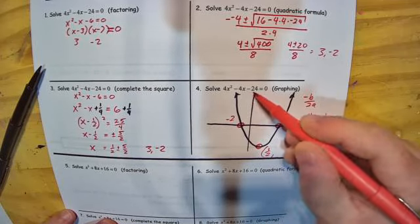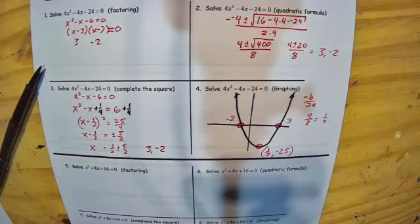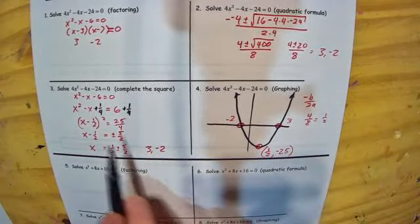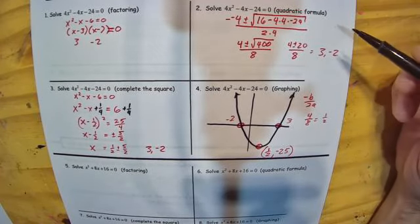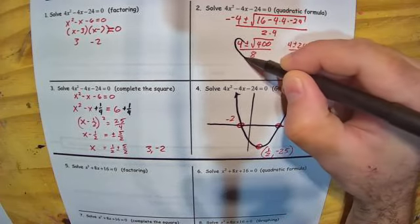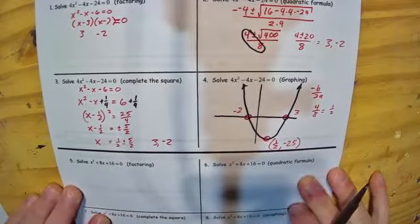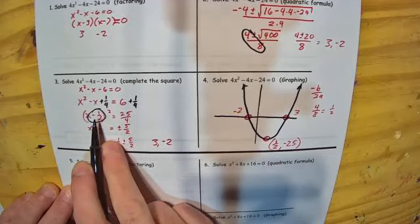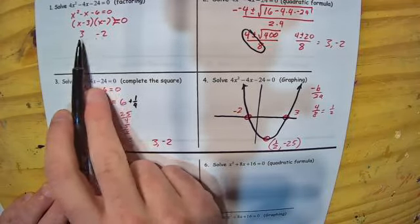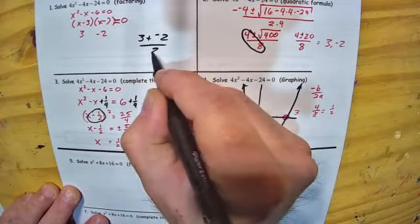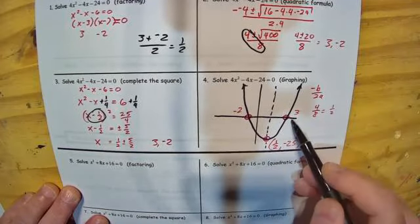To find the y-coordinate for the vertex, we plug one half into the equation: 4 times one half squared minus 4 times one half minus 24, which comes out to negative 25. What we find is the same solutions no matter which way we do it. There's additional information hidden here: this one half appears in the quadratic formula when you do 4 divided by 8, giving you the same one half used to find the x-coordinate for the vertex. We can also find the one half in the completing the square — it's right there. In vertex form, we change the sign on this number and get one half. The x-coordinate is also halfway between the two solutions: 3 plus negative 2 divided by 2 also gives one half.